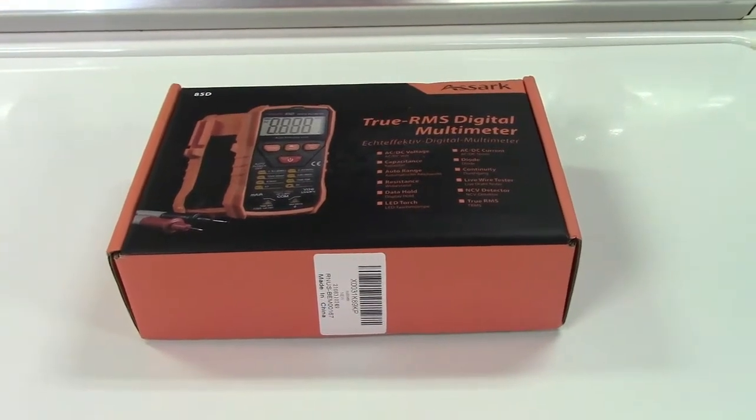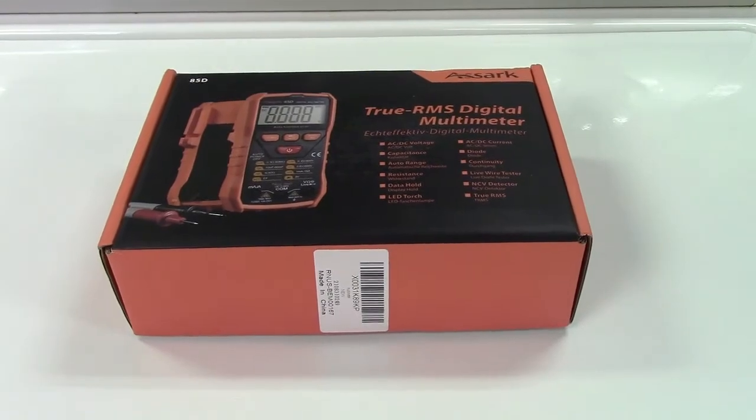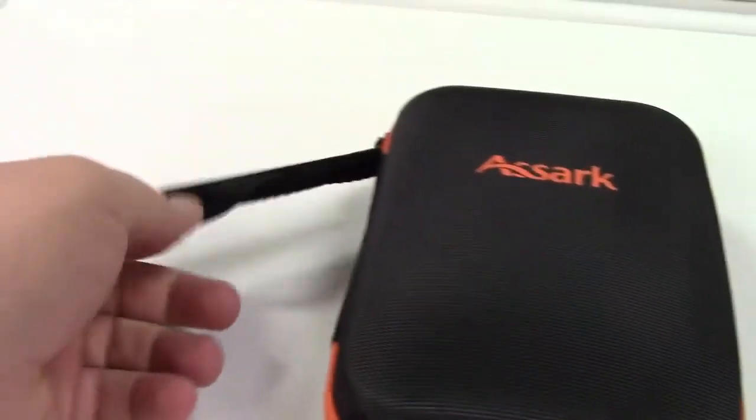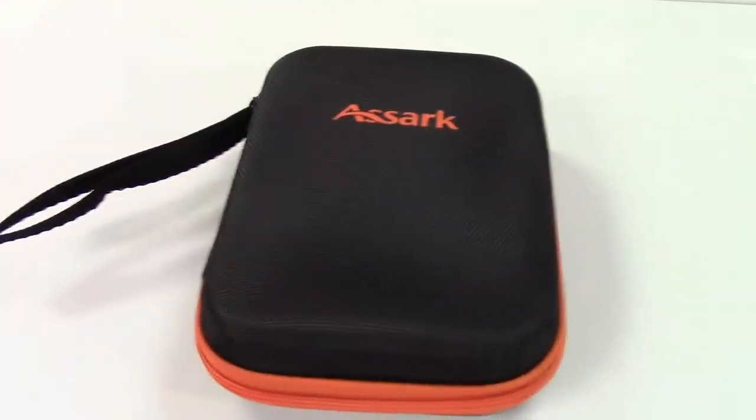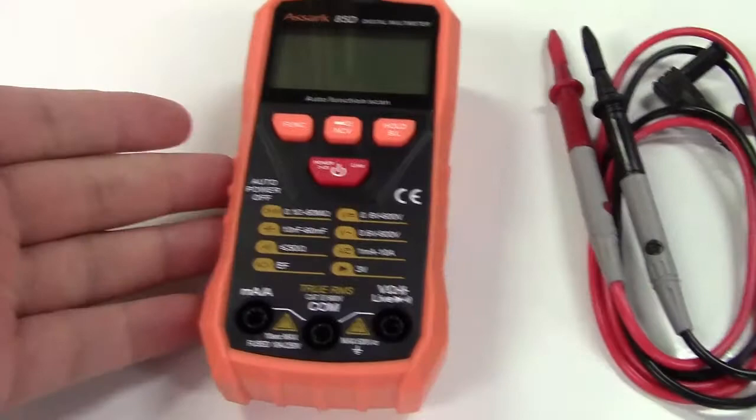This is the ASARC True RMS Multimeter. Let's take it out of the box. Comes in a nice case with a wrist strap. That's a really nice thing to have. In the box you get the user manual.